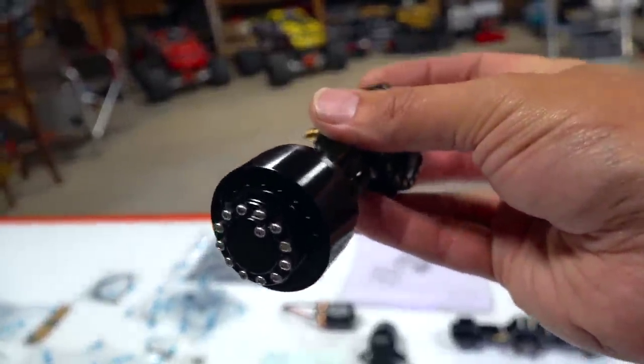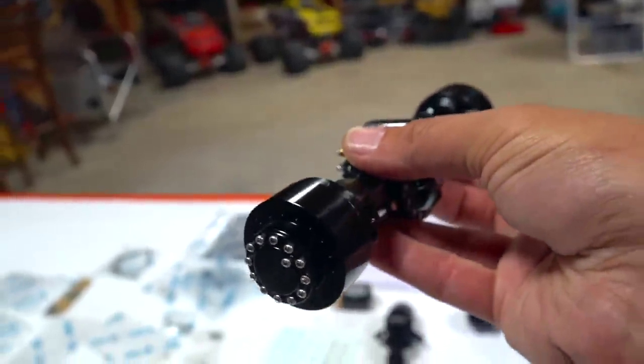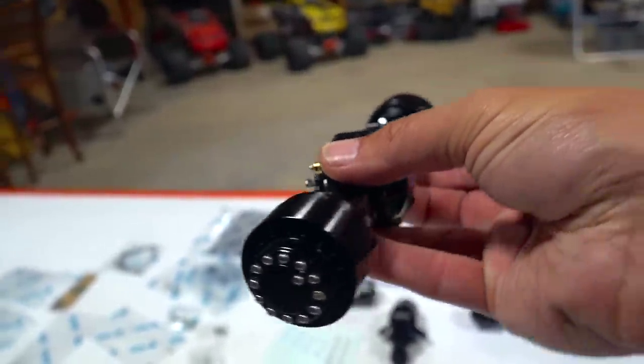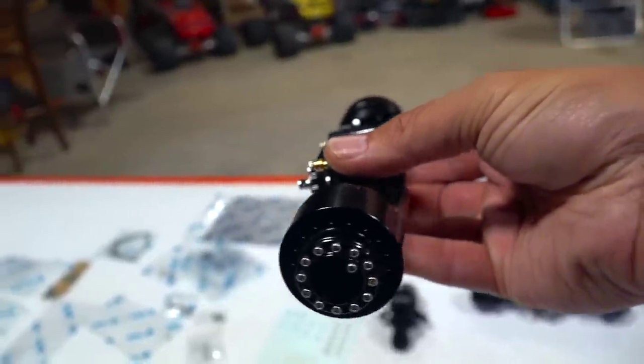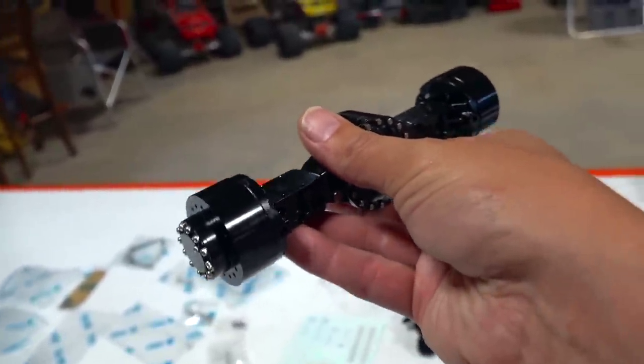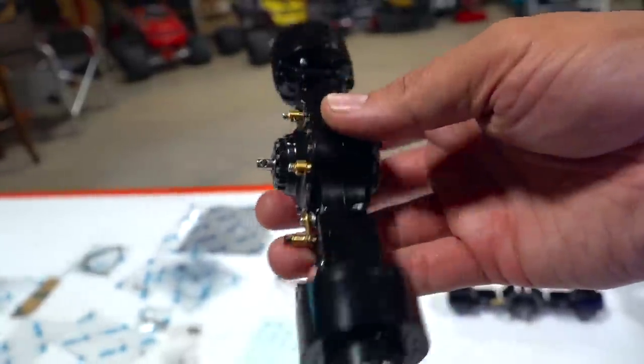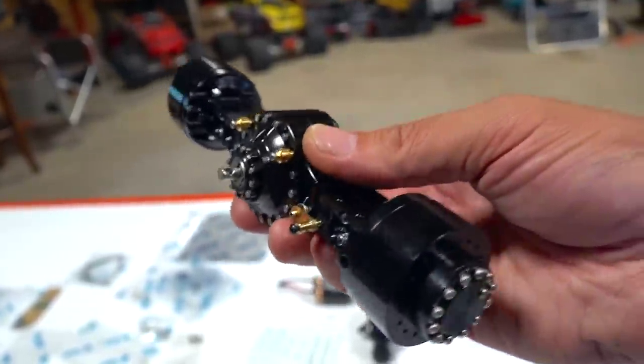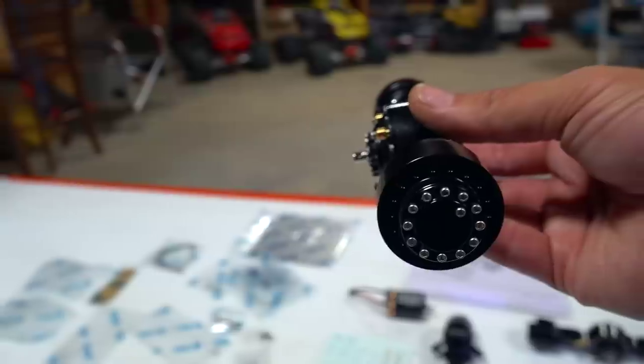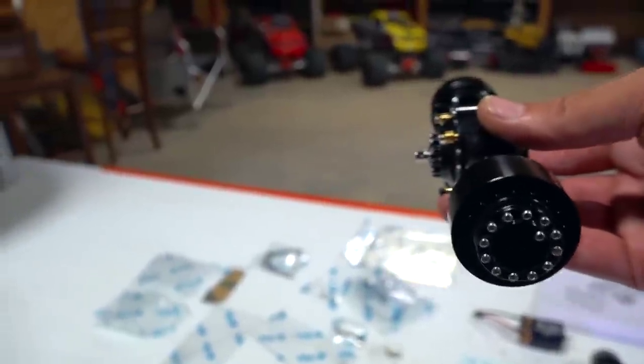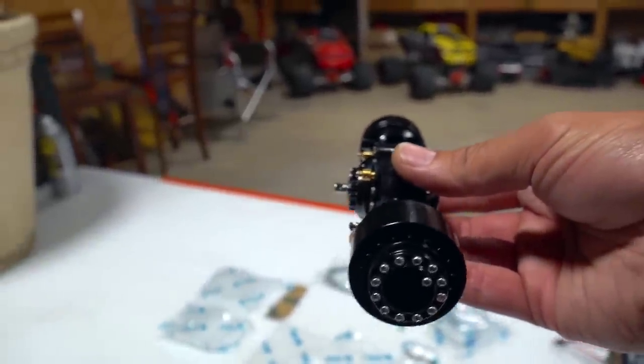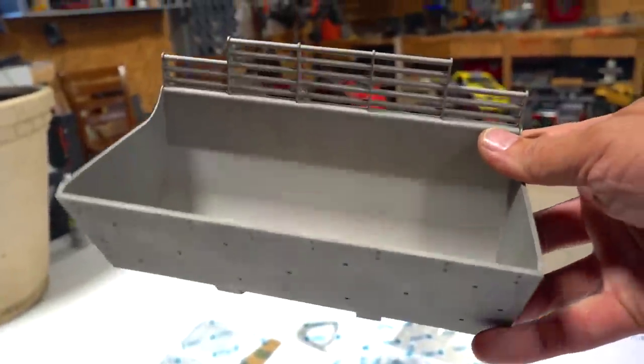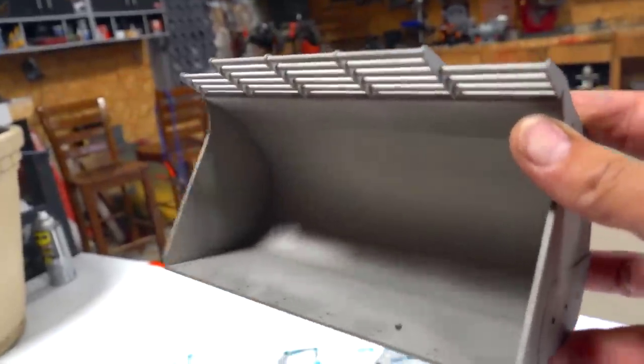And why would that be important in a wheel loader? Well, if you had open differentials, because you have to articulate to turn, right? When you have an articulating machine, the outside wheel has to move like a longer distance than the inside wheel. But if it was locked all the time, it would be very difficult on the gears. So why would you want to have the option of locking it? Well, the option is there because if you want to have traction when you're moving forward into pay, and you want all four tires to lock up so you can actually have a nice full bucket load full of pay dirt.